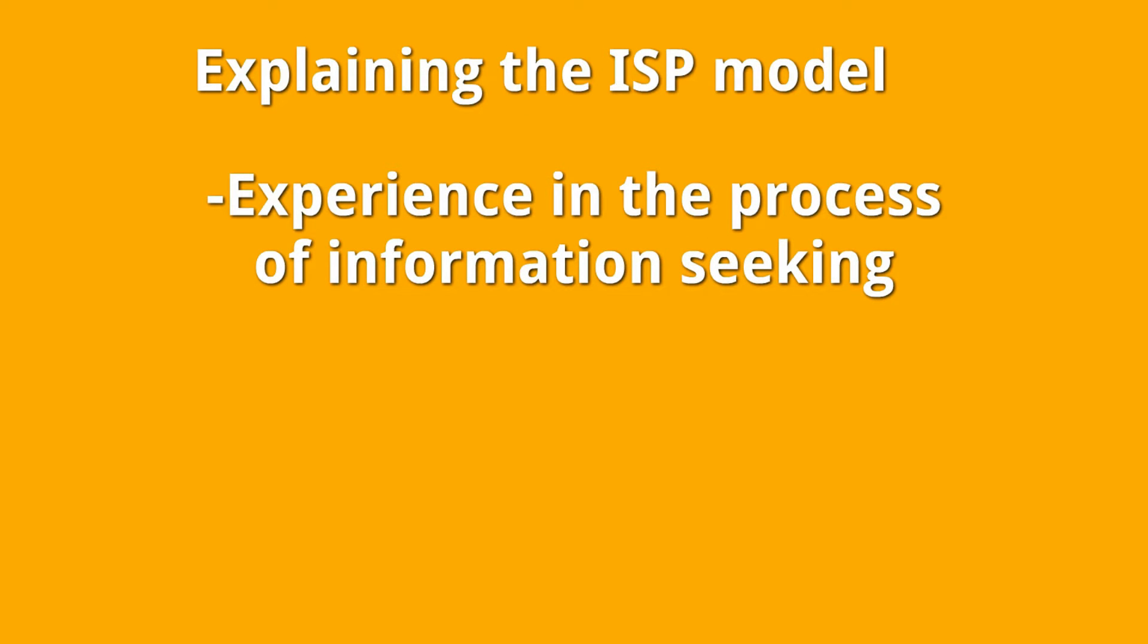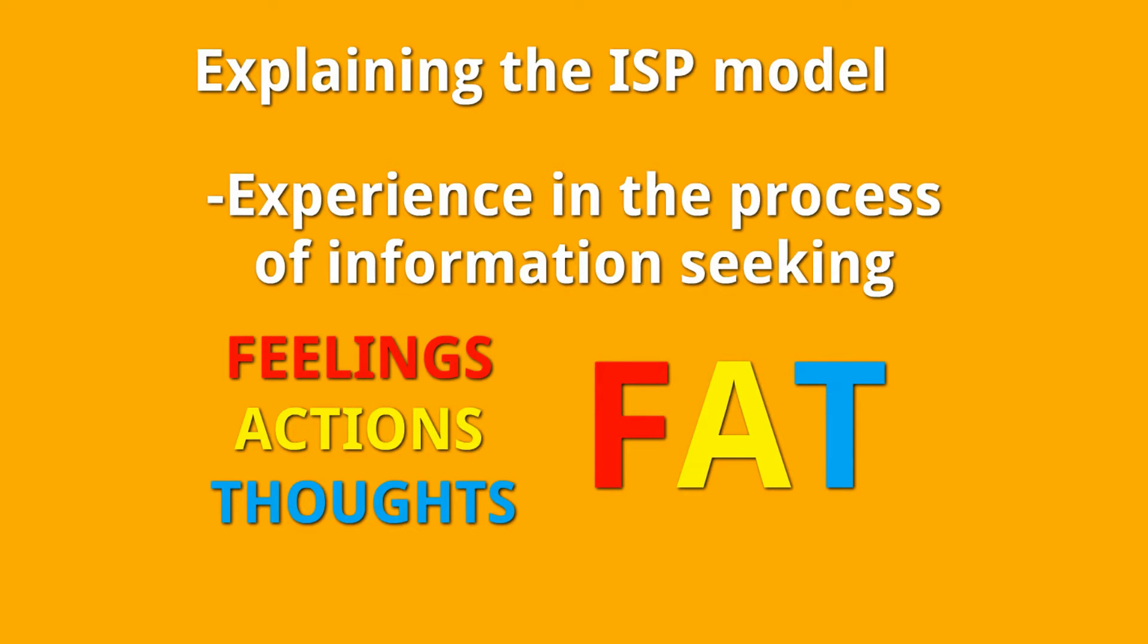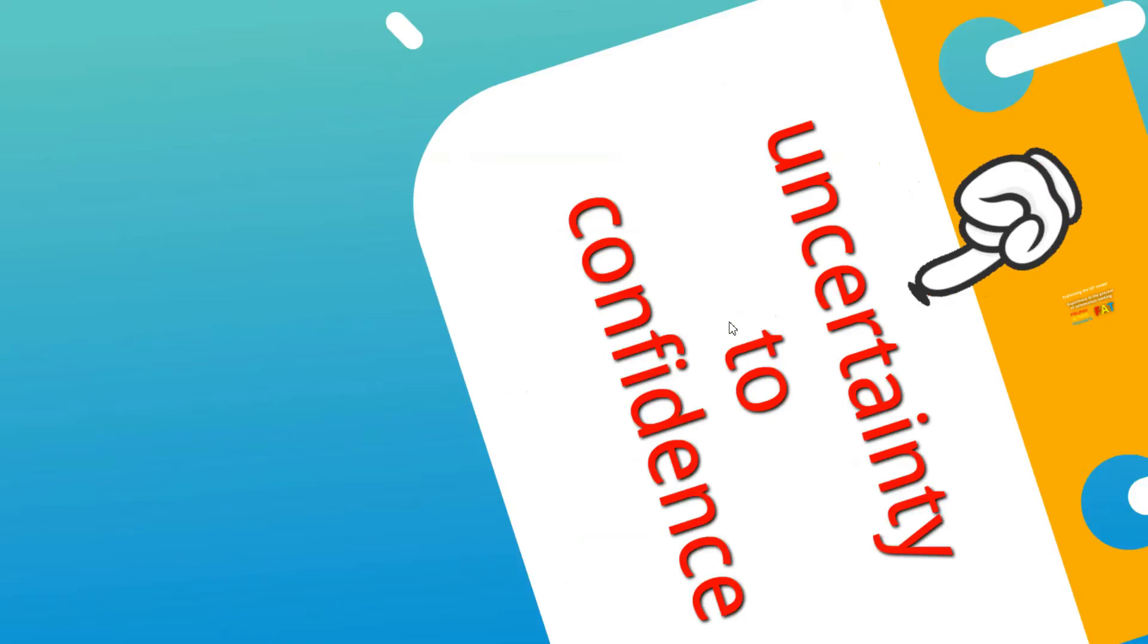Let us have a deeper explanation of the ISP model. The ISP model describes the user's experience in the process of information seeking as a series of feelings, actions, and thoughts, or in short we have this word FAT. When we're talking about feelings, we're talking about anxiety and doubt that becomes more confident and certain. When we're talking about actions, people seek information relevant to the general topic and ends to a specific topic. And when we're talking about thoughts, it starts as uncertain, vague, or unclear and becomes clearer, more focused, and specific as the search process progresses. So the ISP model explains the experience that our researcher encounters, and we're discussing FAT: the feelings, the actions, and thoughts.